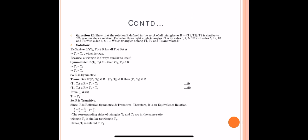For transitive: if (T1, T2) belongs to R and (T2, T3) belongs to R, then (T1, T3) belongs to R. (T1, T2) belongs to R means T1 is similar to T2; (T2, T3) belongs to R means T2 is similar to T3. From first and second, we can say T1 is similar to T3. So R is transitive.